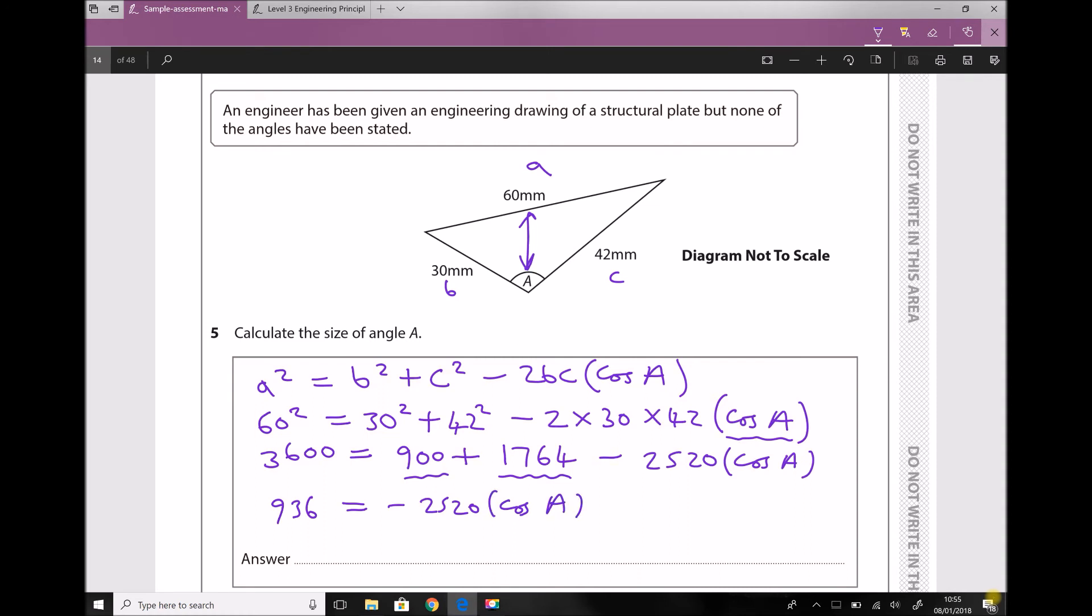Next, I'm going to divide each side by minus 2520 to get cos A on its own. We're getting closer to our solution now because cos A equals 936 divided by minus 2520.